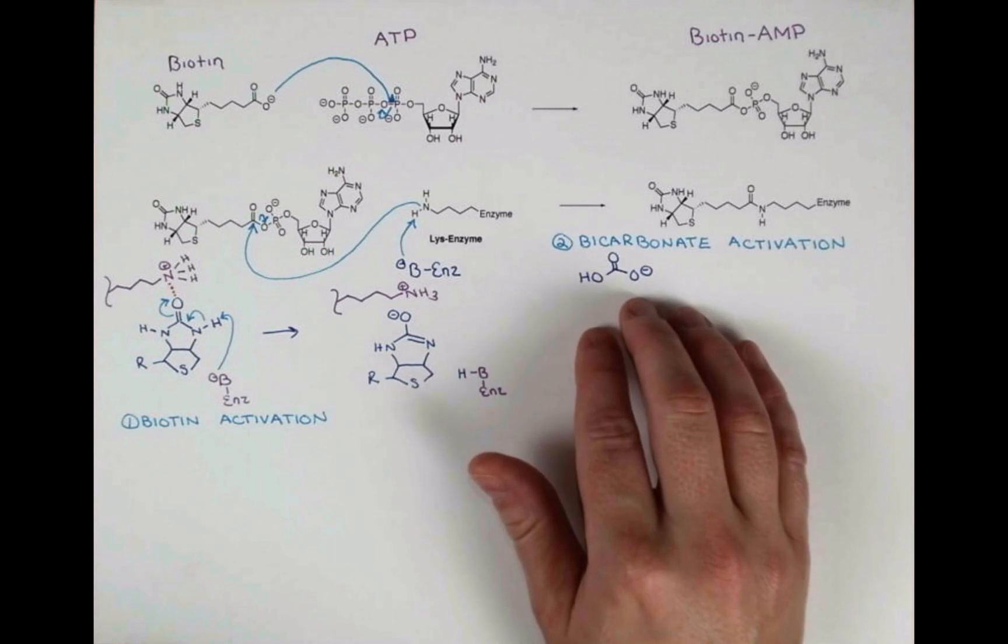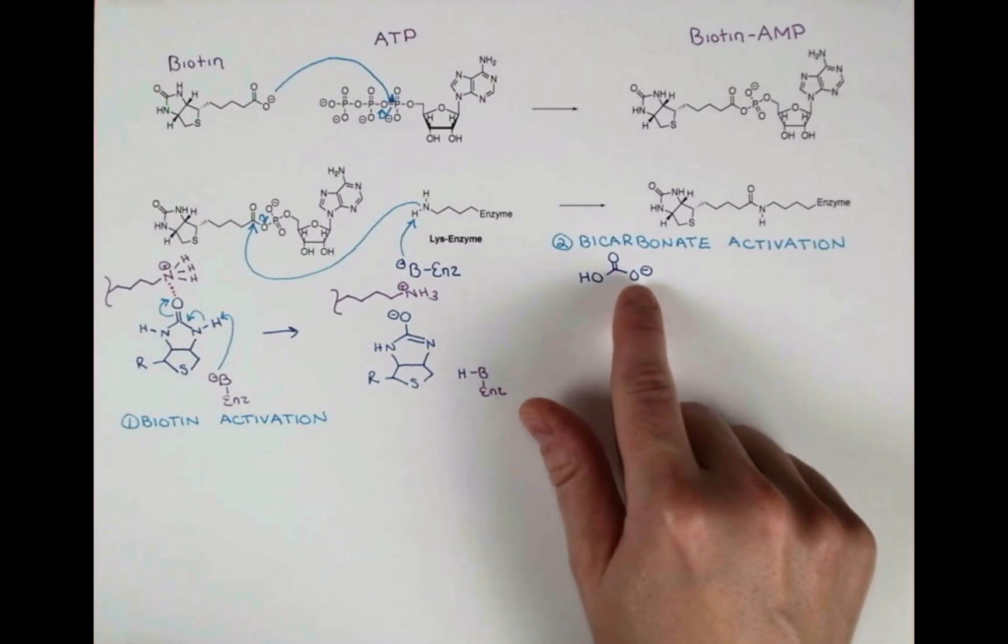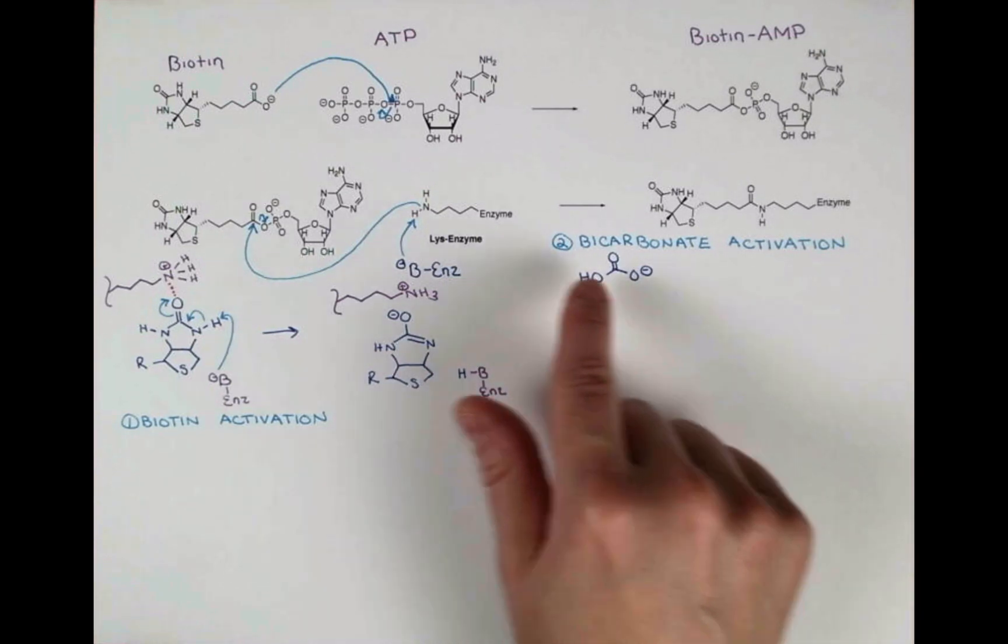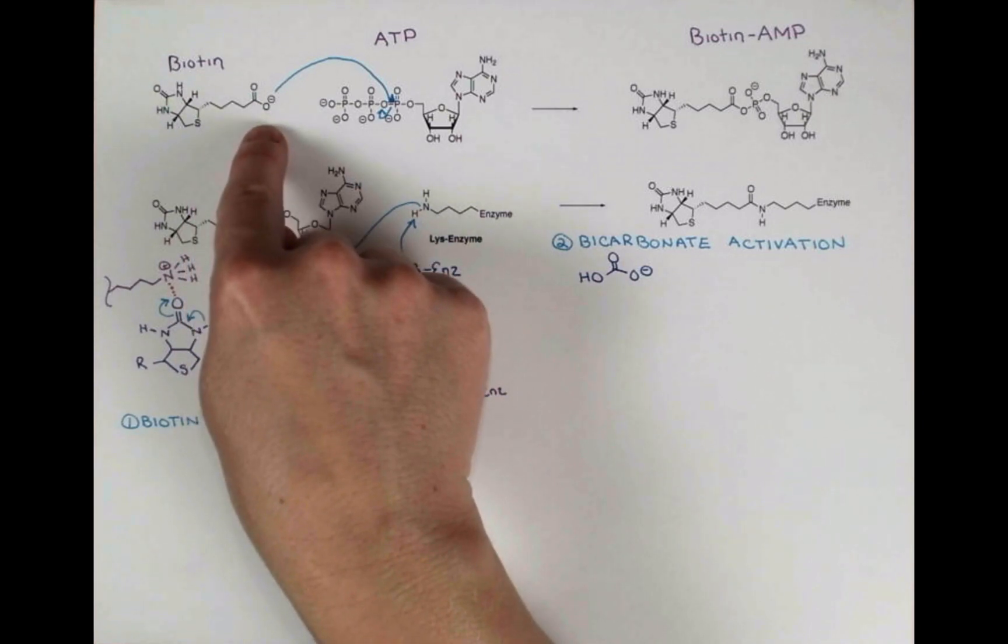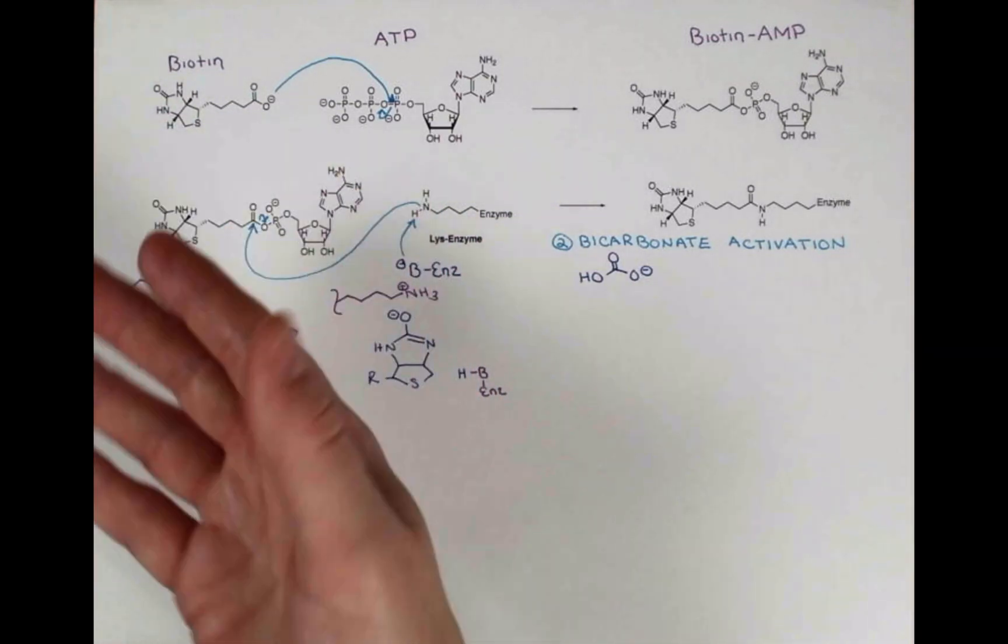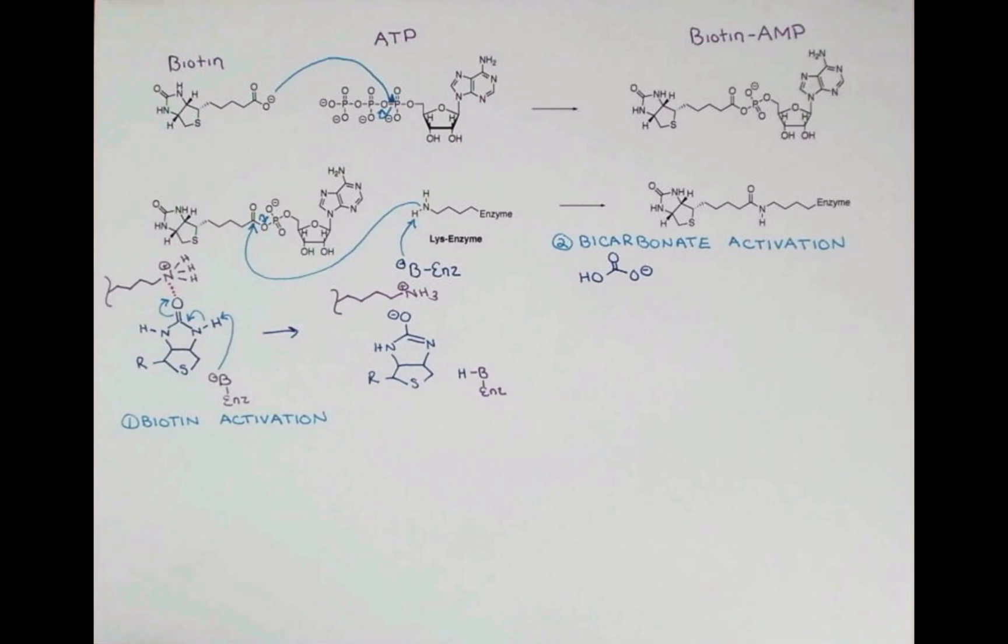So this is how bicarbonate is going to look in the body at pH 7.4. We have this one OH group deprotonated, so we have this anion. It actually looks a lot like this. And remember, we couldn't just attack this directly with lysine. We needed to activate it in some way. And here we used ATP.